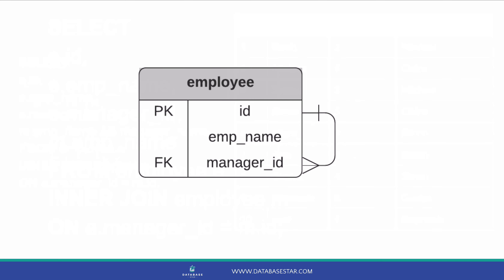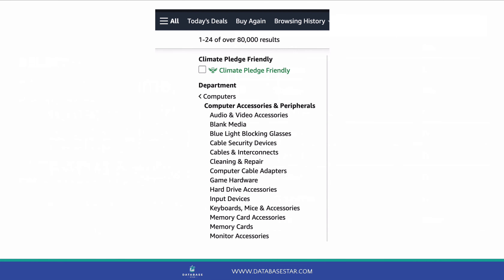Here's what the table would look like in an entity relationship diagram. We can see that there is a relationship line that joins to itself. This is how we can tell on the diagram that a self-join can be used. There's another common example that can be used for self-joins, and that is product categories.